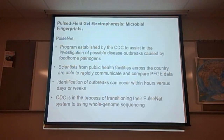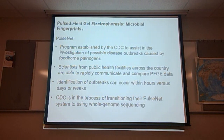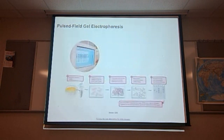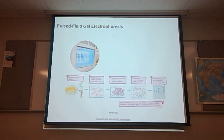PulseNet is a program established by the CDC to assist in the investigation of possible disease outbreaks caused by foodborne pathogens. Scientists from public health facilities across the country can rapidly communicate and compare PFGE data. Indication of outbreaks can occur within hours versus days or weeks. The CDC is in the process of transitioning their PulseNet system to whole genome sequencing, which would make identification even quicker.